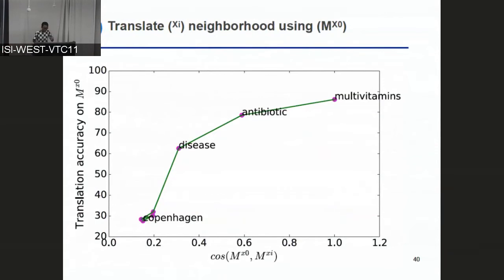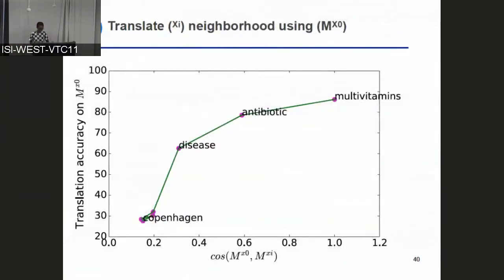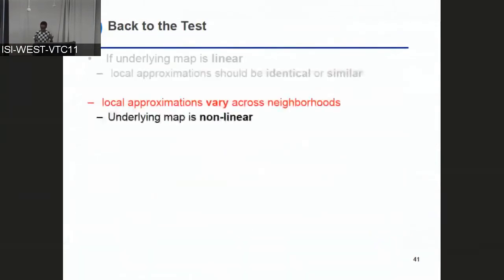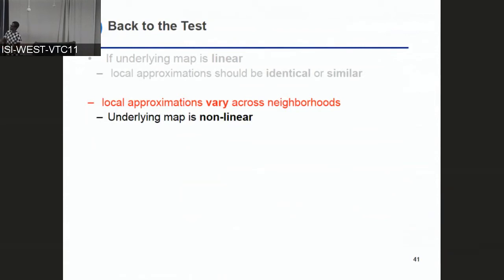We can see that the maps are indeed different and vary across neighborhoods in a very specific way: there is a correlation between the distance between neighborhoods and the similarity between the maps. From what we have seen, we can conclude that the underlying map is indeed non-linear.